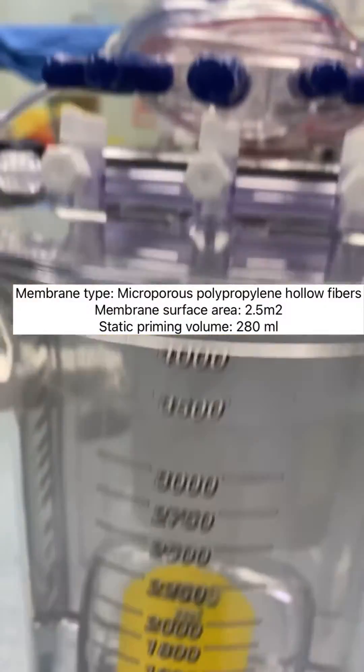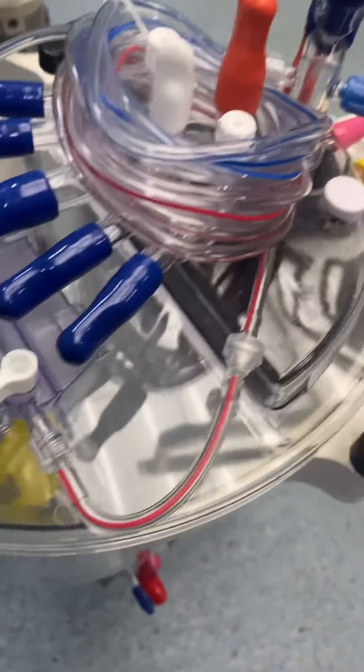Membrane type: microporous polypropylene hollow fibers. Membrane surface area: 2.5 square meters.